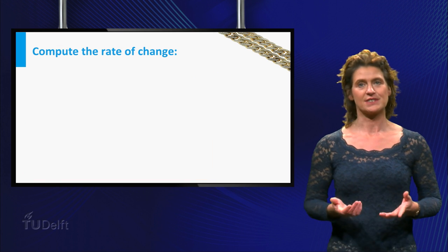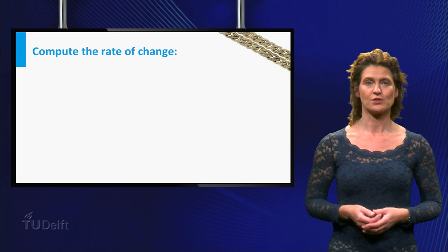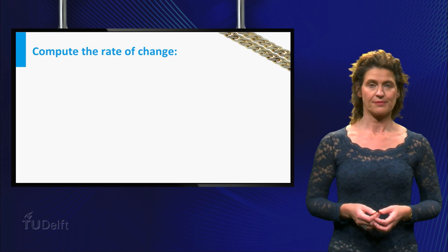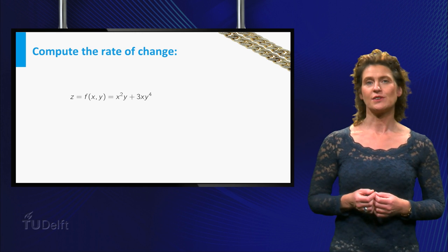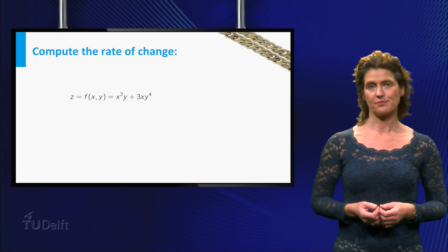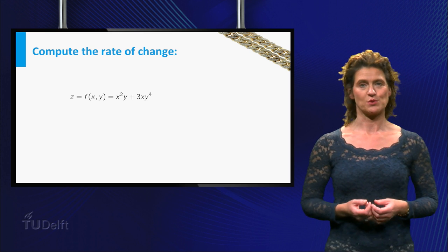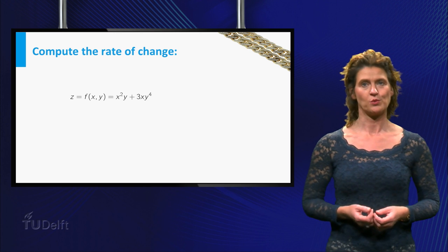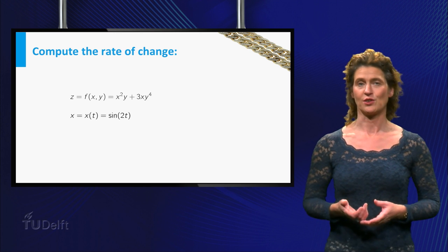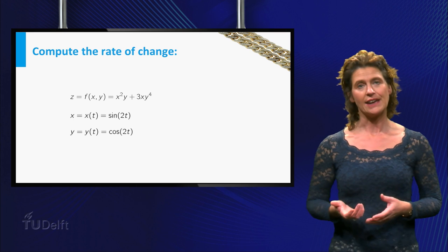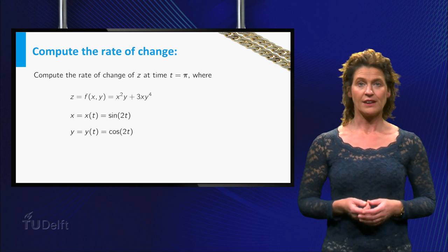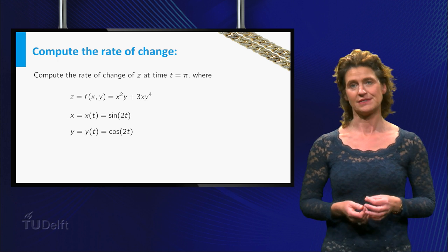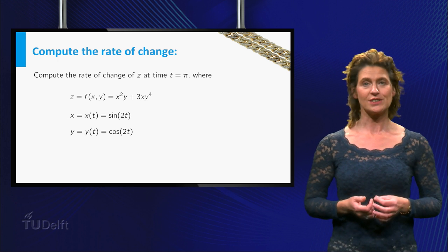This is the simplest case of the chain rule for functions of several variables. You will encounter more complicated cases in class. Here is a question to think about before coming to class: look at the function x squared times y plus 3x times y to the fourth, with x equal to the sine of 2t and y equal to the cosine of 2t. Compute the rate of change of z at time t equals pi using the chain rule.